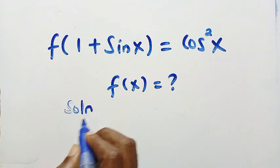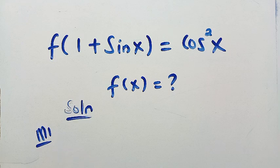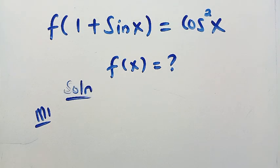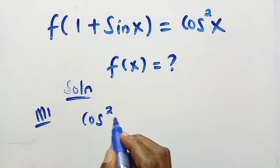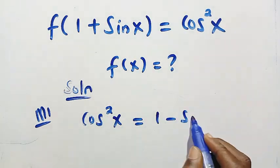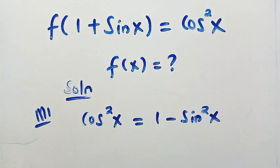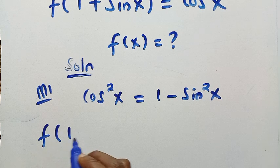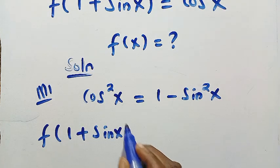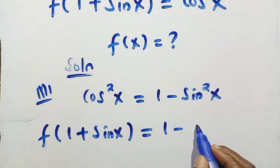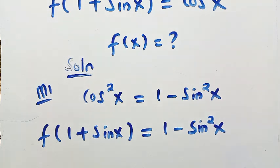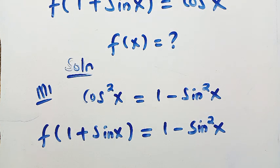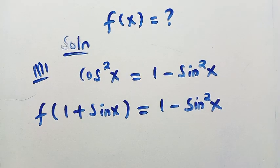Let's get into it. Method one: we start by converting cos squared x into an expression involving sine x. We note that cos squared x equals one minus sine squared x. Substituting this, we have f of one plus sine x equals one minus sine squared x. I have to convert this because the domain is in terms of sine x.